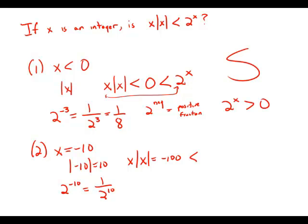Of course, negative 100 is less than 0, and 1 over 2 to the 10th is greater than 0. So by transitivity of inequality, 1 over 2 to the 10th is greater than negative 100. This statement also, by itself, is sufficient to answer the question.